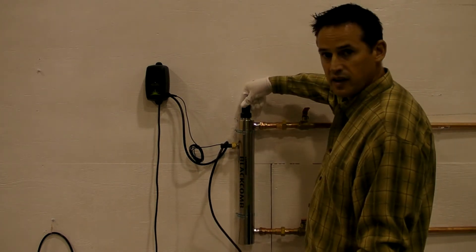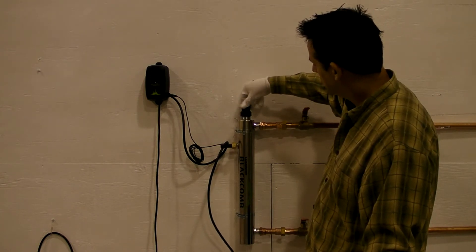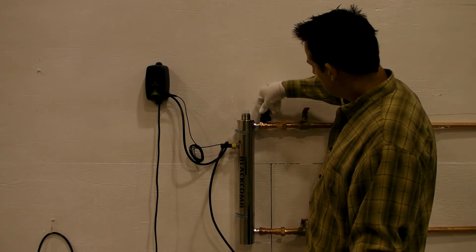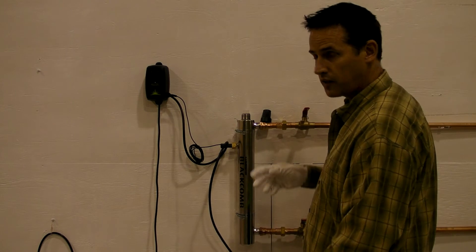Take the gland nut, turn it a quarter turn, remove it from the system. Because it's a domed reactor, you don't have to drain the water from the system.